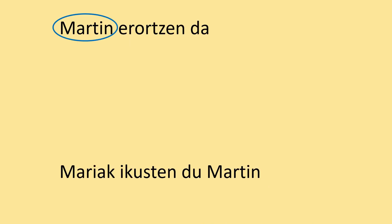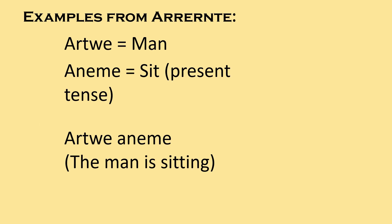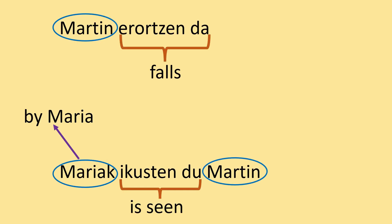In a sentence like 'Martin falls,' Martin doesn't change. Martin is also the one being seen — he doesn't change in Basque either. The one that has a special suffix is Maria, because she's the one doing the action: 'Mariak' is doing something to Martin. You could almost translate an ergative sentence like a passive form — 'Martin is seen by Maria.' So 'Mariak' with a K literally means 'by Maria,' the verb is like a passive 'is seen,' and Martin stays as Martin. That's how an ergative-absolutive language works.